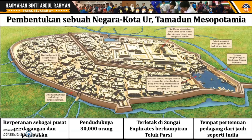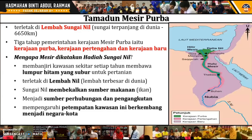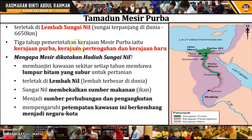Sekarang kita pergi pula untuk Tamadun Mesir Purba. Tamadun Mesir Purba terletak dekat lembah Sungai Nil. Sungai Nil merupakan sungai yang terpanjang di dunia, dengan panjang 6,650 km. Untuk kerajaan Mesir Purba, terdapat 3 tahap pemerintahan.